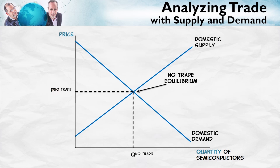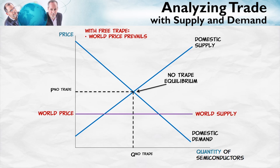That gives us the price with no international trade, and the quantity both produced and consumed with no international trade. Now, suppose that consumers in this country can go out into the world and buy as much of these semiconductors as they want at the world price. So if we had complete free trade, consumers would be able to buy as much as they want at the world price, as given by this world supply curve.